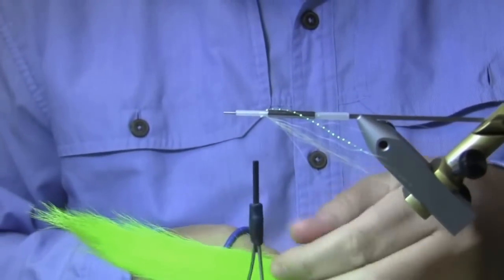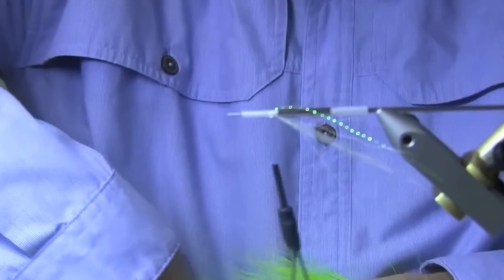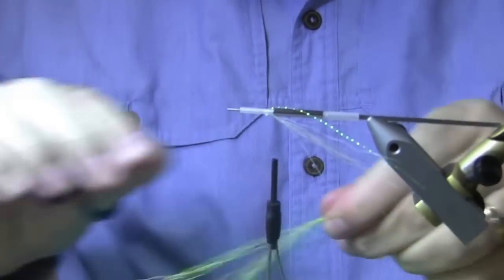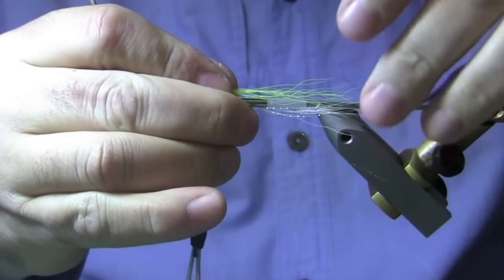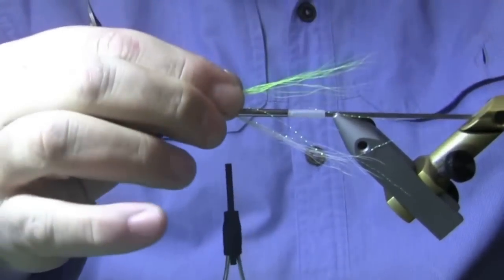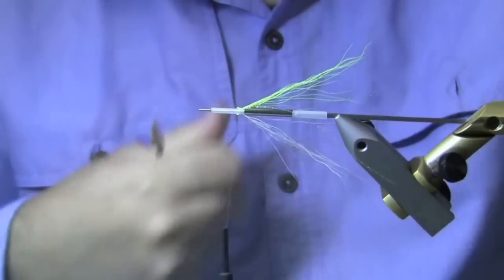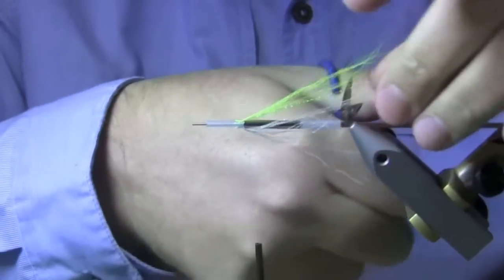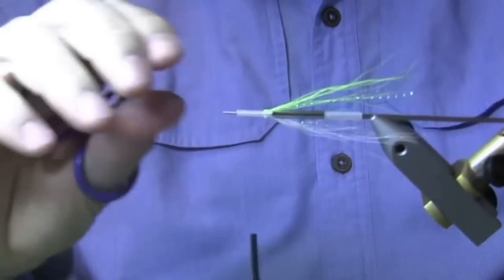Again, we're going to use a little chartreuse bucktail from hairline here. Super, super sparse on the top. Just trying to get my measurements down here a little bit. I've got some crystal flash hanging out the back. I'll just go ahead and trim that up real quick.